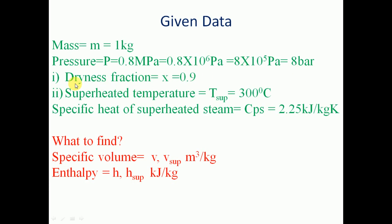For the first case, the dryness fraction is given as x equal to 0.9. For the second case, superheated temperature T is equal to 300 degree Celsius is given. The specific heat of superheated steam Cps is equal to 2.25 kilo joule per kg kelvin. We need to find the specific volume and enthalpy of wet steam and superheated steam.